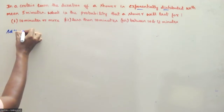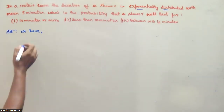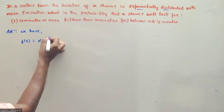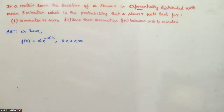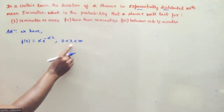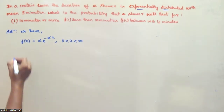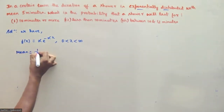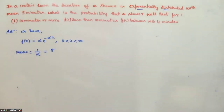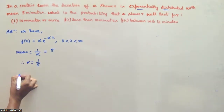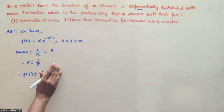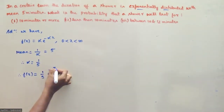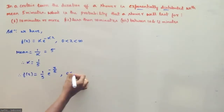We have f(x) = alpha * e^(-alpha*x) for x from 0 to infinity. Given the mean is equal to 1 by alpha, and the mean is equal to 5. Therefore, alpha = 1/5, and f(x) = (1/5) * e^(-x/5) for x from 0 to infinity.